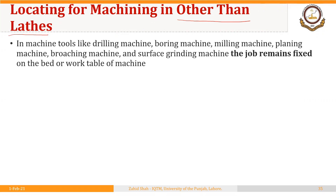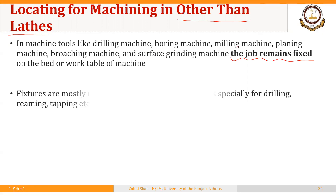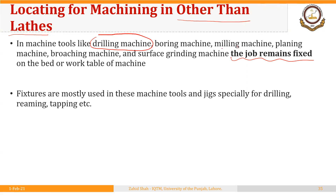In machine tools like drilling, boring, milling, planing, et cetera, the job remains fixed during machining, so it is to be held in a fixture or a chuck. Fixtures are mostly used in these machine tools, and jigs are used especially for drilling, reaming, and tapping — for repeatedly making or modifying holes. For other machines like milling, planning, broaching, and grinding, we design fixtures.